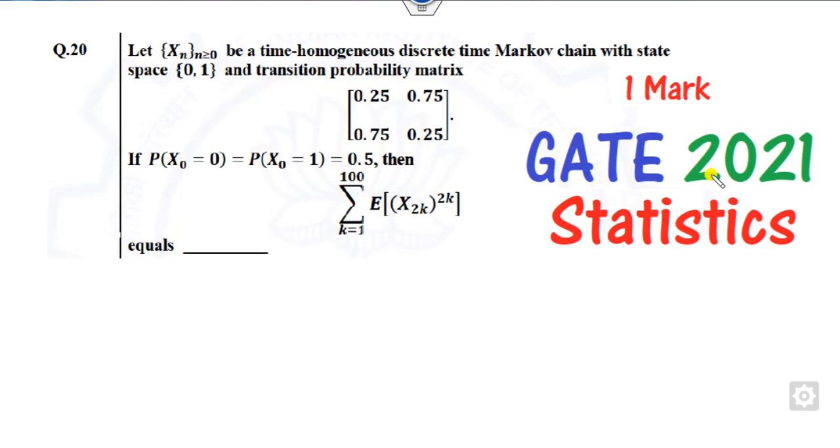Hello students, welcome to the GATE 2021 statistics paper. Today we will discuss question number 20 which is of one mark related to the Markov chain.